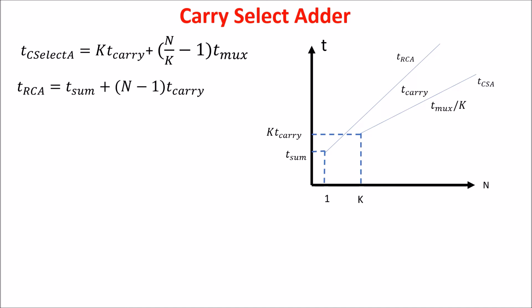If we compare the total delay of this circuit with that of the ripple carry adder, we see we always have a linear relation with the number of bits, but the slope in the carry select adder is T-mux over K, and that of the ripple carry adder is T-carry, so it is bigger. Something similar happens in the carry skip adder, about which I leave a link in the description.